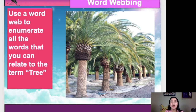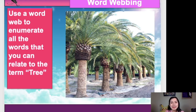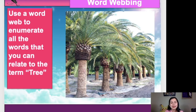Now, let us have this one — Word Webbing. Use a word web to enumerate all the words that you can relate to the term tree. Anyone? Yes, Stephen — Food. Very good. How about you, Demon — Shelter. That's nice. Mary — Toy. Okay. How about Simon — Design. Very good. Thank you very much for sharing your answers.